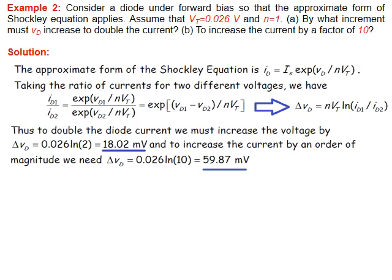Now another example. Consider a diode under forward bias so that the approximate form of Shockley equation applies. Assume that VT is given and n is given. By what increment must VD increase to double the current? B, to increase the current by factor 10? So b it's just reflection, but let me come to a. Now, this is Shockley equation. Sometimes we ignore the one. You remember in the equation there is minus one. We sometimes ignore it because it's small compared to the exponential. So if this is the form, I have the current and I have the current after I double the voltage. He wants me to see how much this value. I mean, sorry, when I double the current, how much the voltage? So I will call them ID1 with respect to VD1 and ID2 with respect to VD2.